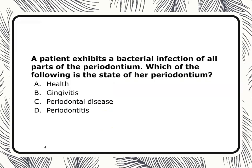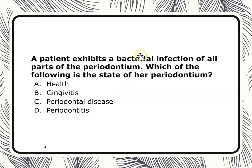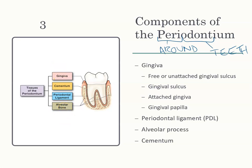Here's a question: a patient exhibits a bacterial infection of all parts of the periodontium — the gingiva, the cementum, the PDL, the alveolar bone. Which of the following is the state of her periodontium? The answer is D, periodontitis. Periodontitis means you have bone loss. When you think of perio, you think of bone loss. So if all of these are affected, including the bone, then it has to be periodontitis.